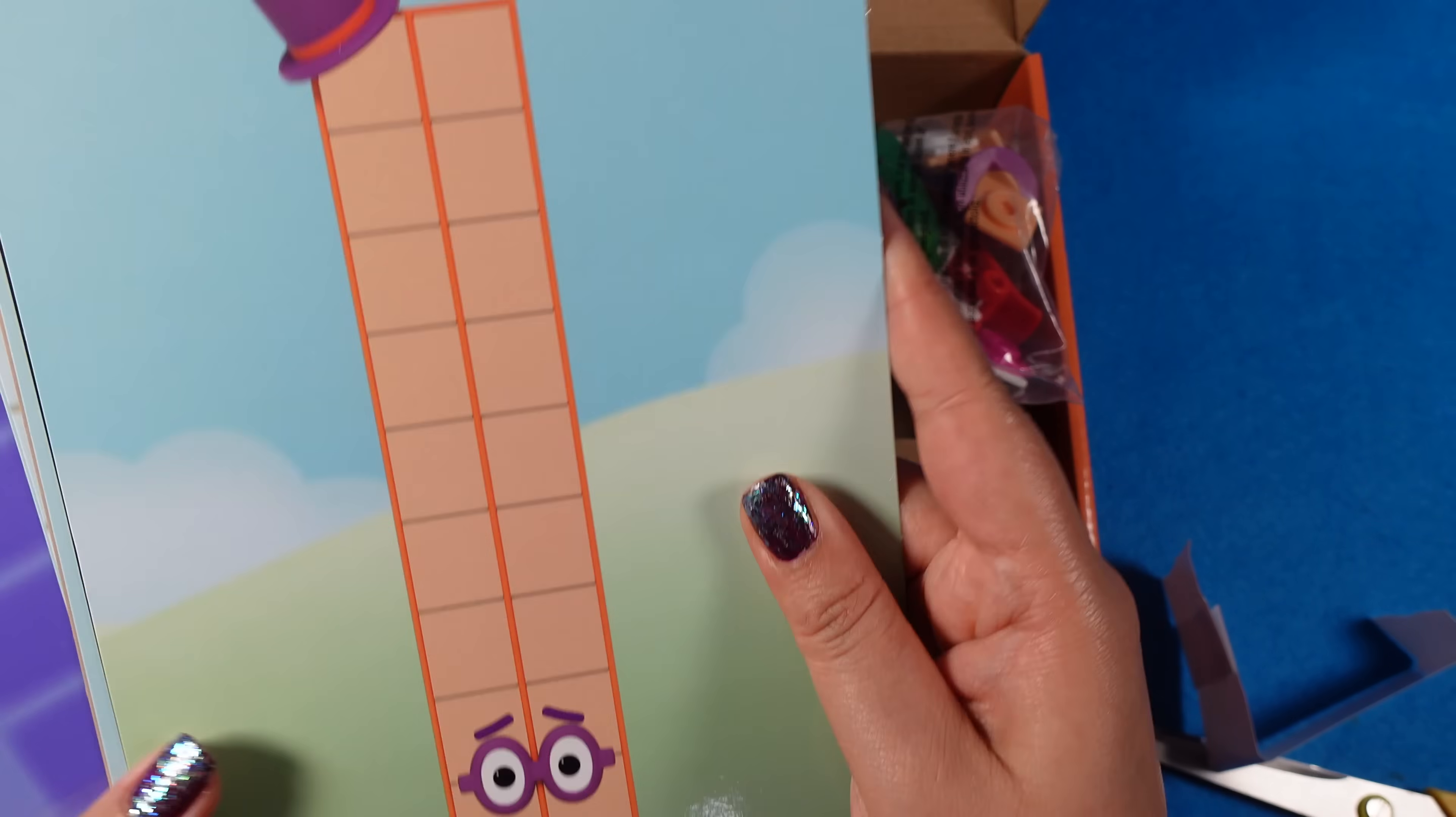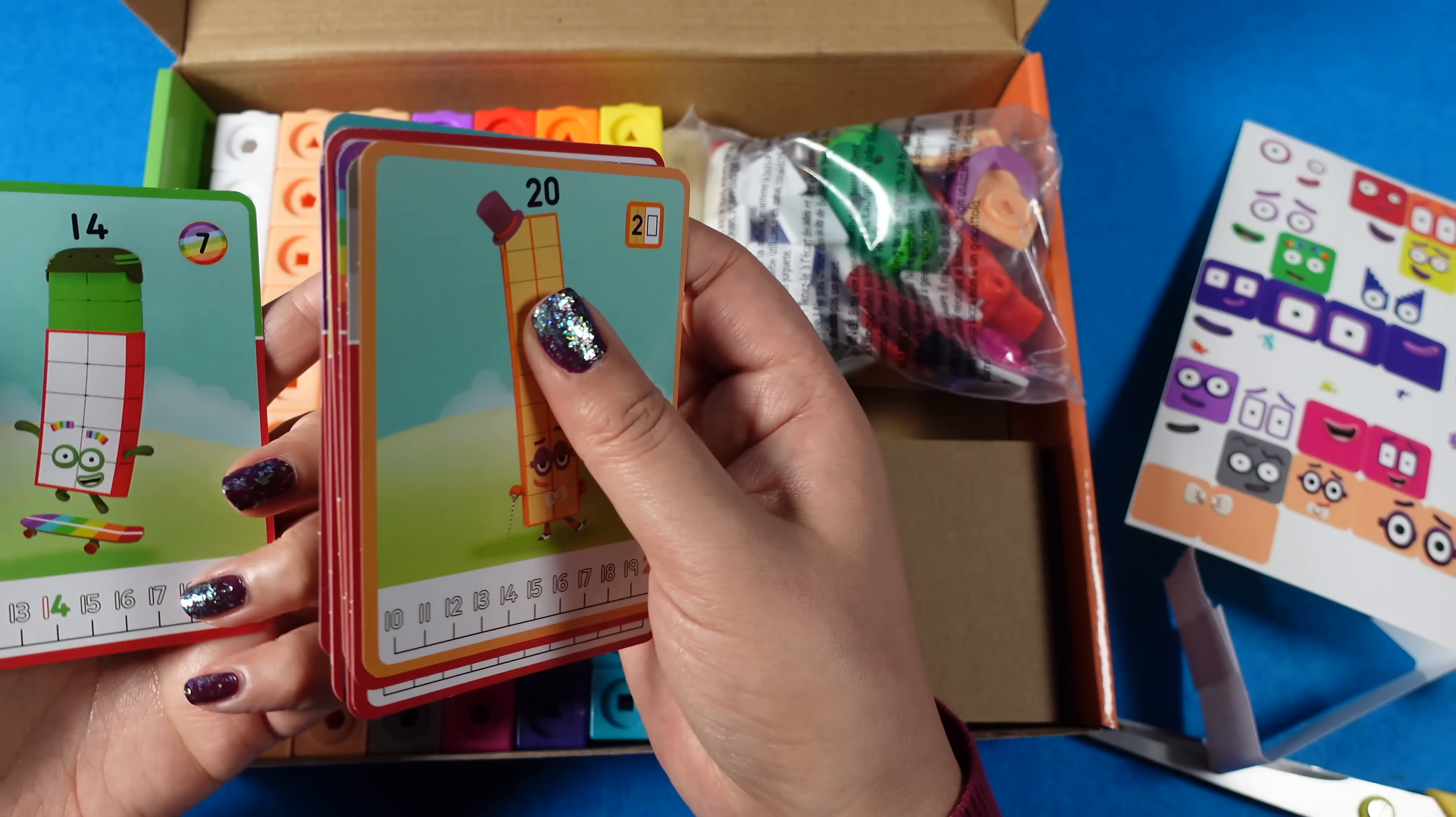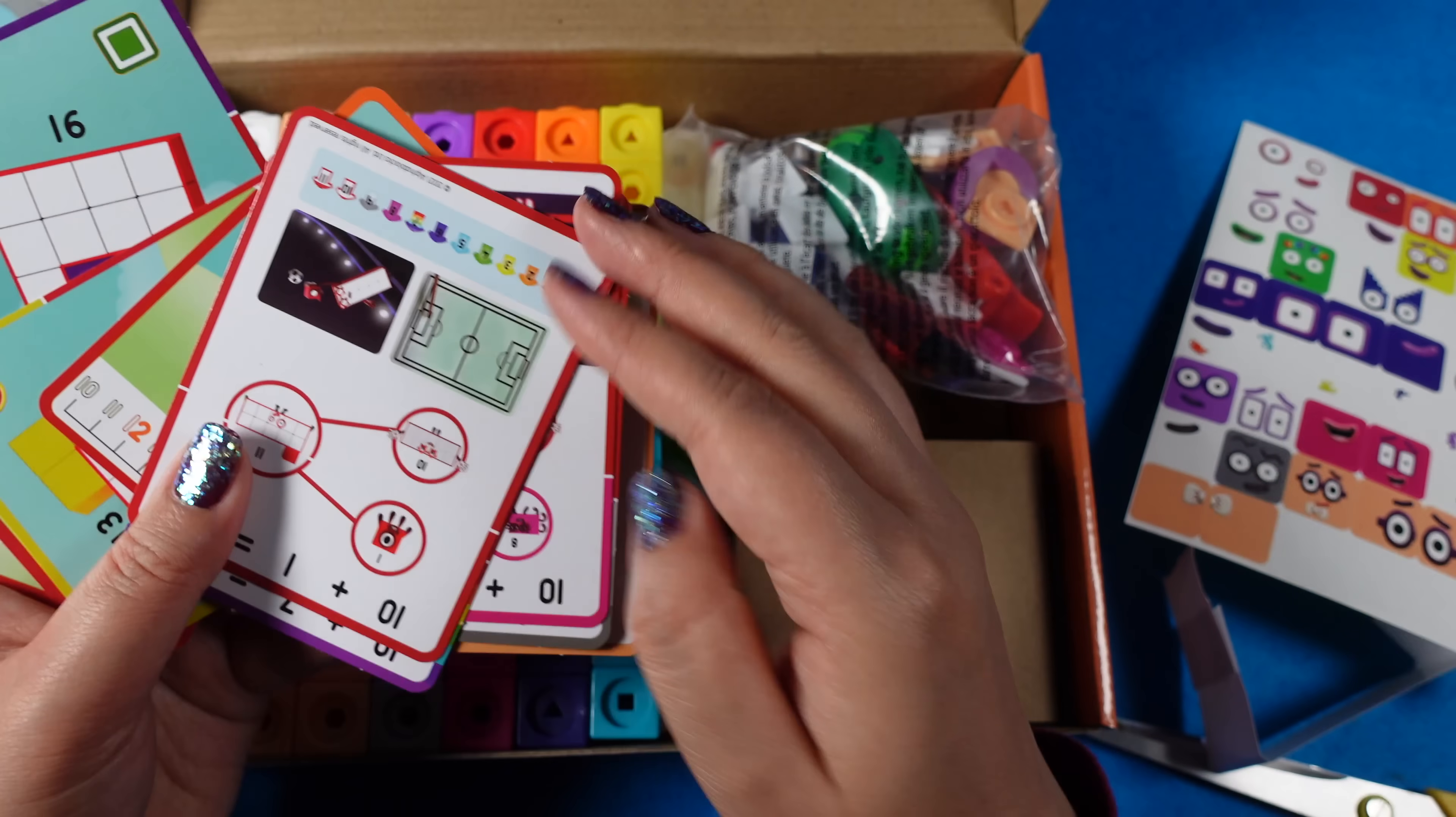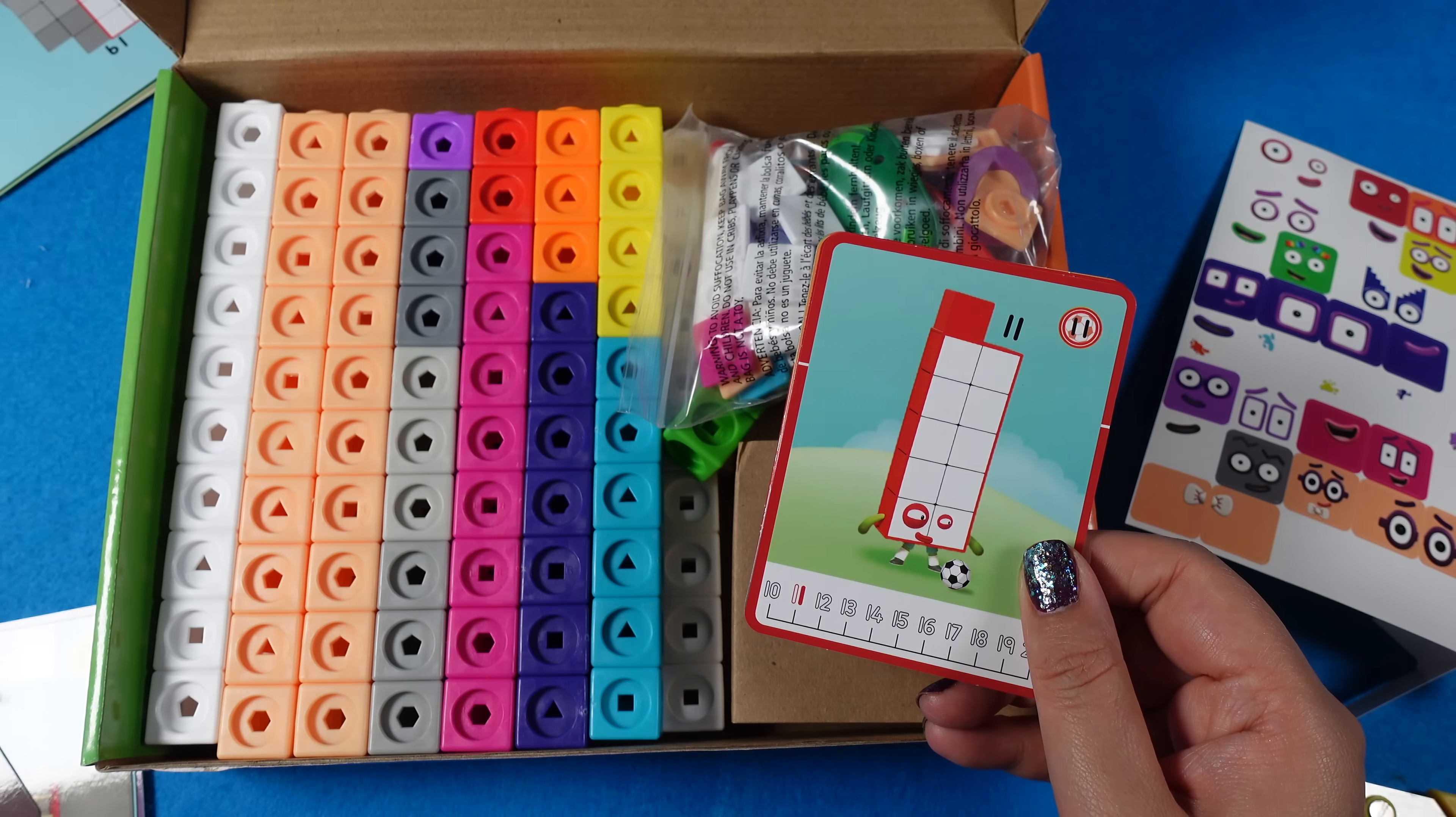Now let's have a look at the cubes. So you have everything you need in this kit to make the numbers from 11 until 20. You can also use them in whatever way that you want. And if you have the first set, then even better, because you can have all the little pieces, all the characters together.